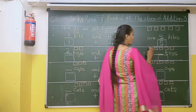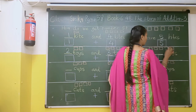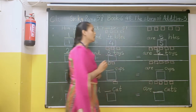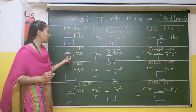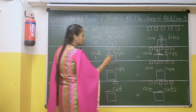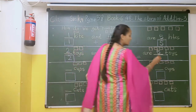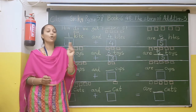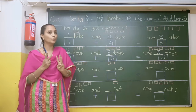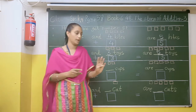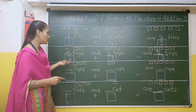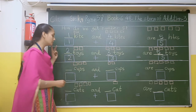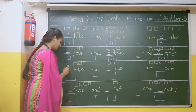And how many will it be totally? 1, 2, 3, 4, 5. So how many total toys are there? 5. So if we have 2 toys and someone gives us another 3 toys, there will be totally 5.